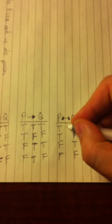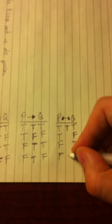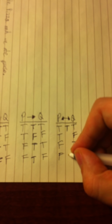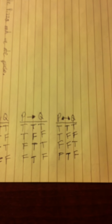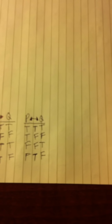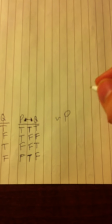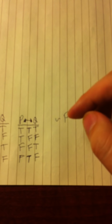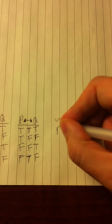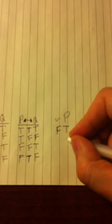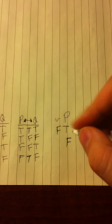Double arrow equals double letters: if you have two Ts, that makes the double arrow true; if you have two Fs, that also makes it true; a mismatch makes it false. And finally, the tilde: if the statement 'we had pizza' is true, then 'tilde P' — we didn't have pizza — is false. If it's false that we had pizza, then saying we didn't have pizza is true.